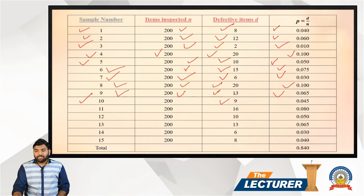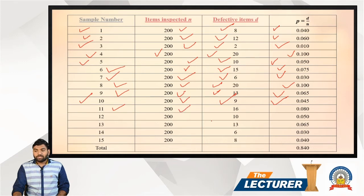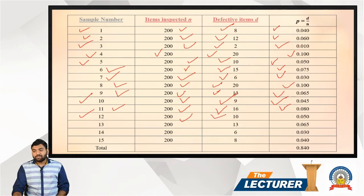For sample nine: defective item is 9, divided by 200 = 0.045. For sample ten: defective item is 9, answer is 0.045. For sample eleven: defective item is 10, divided by 200 = 0.050. For sample twelve: defective item is 10, divided by 200 = 0.050.